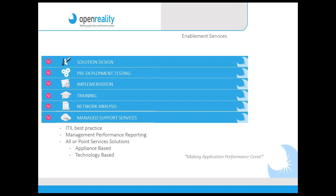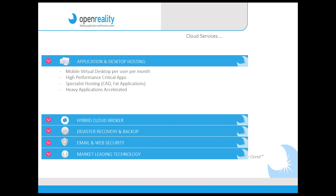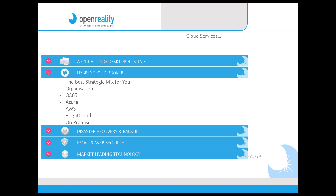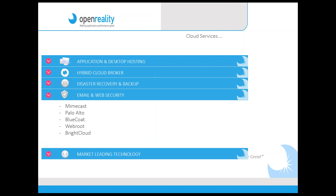We can provide any level of service you want, whether just a support desk, a full managed service, or just support. We've also been delivering cloud-based and virtual hosting services for a significant number of years under our Bright Cloud brand, with application and desktop hosting. We're also able to broker a number of other cloud services — Office 365, Amazon, our own Bright Cloud — delivering hybrid cloud services, disaster recovery and backup services either on-premise or into cloud, as well as hosted security applications.